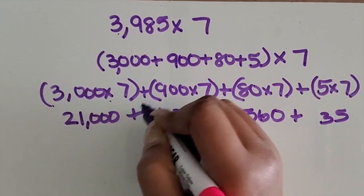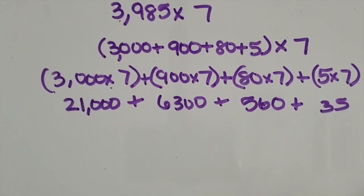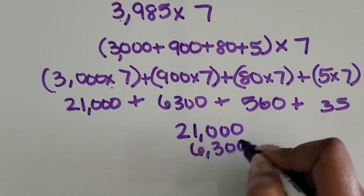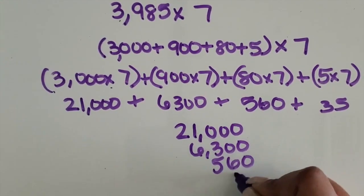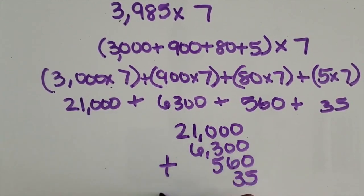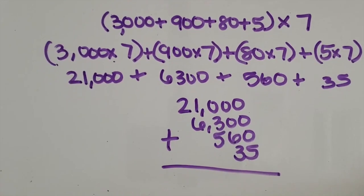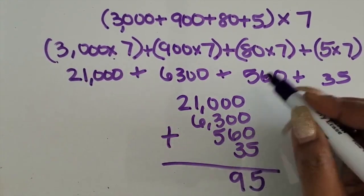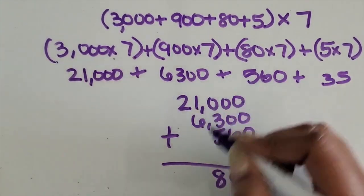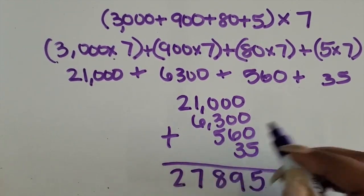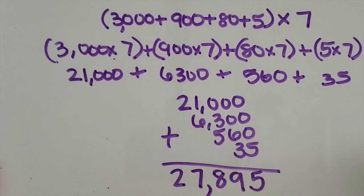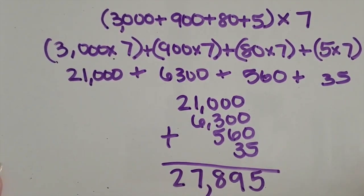Then we're adding those together. If it's too much to add mentally, students can line their numbers up again vertically by place value and add that way. We have 5 ones, 9 tens, 8 hundreds, 7 thousands, and 2 ten thousands, or 20,000. So our total product is 27,895. I'm going to write that up here.